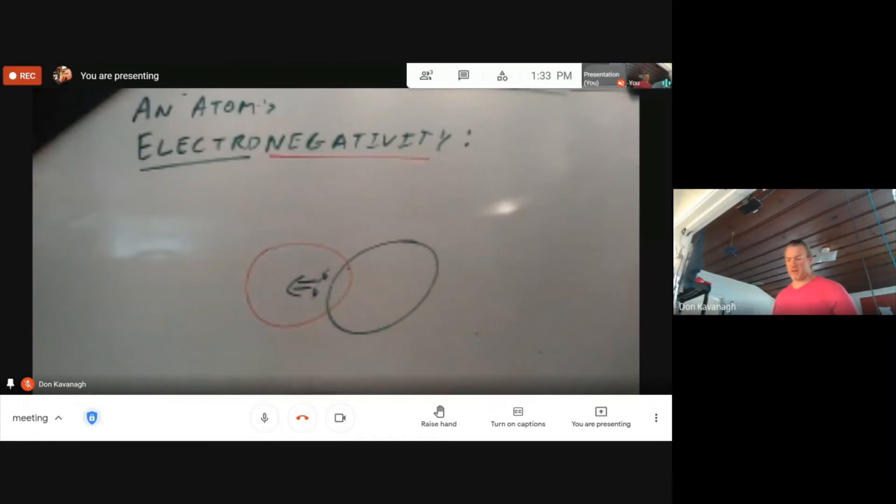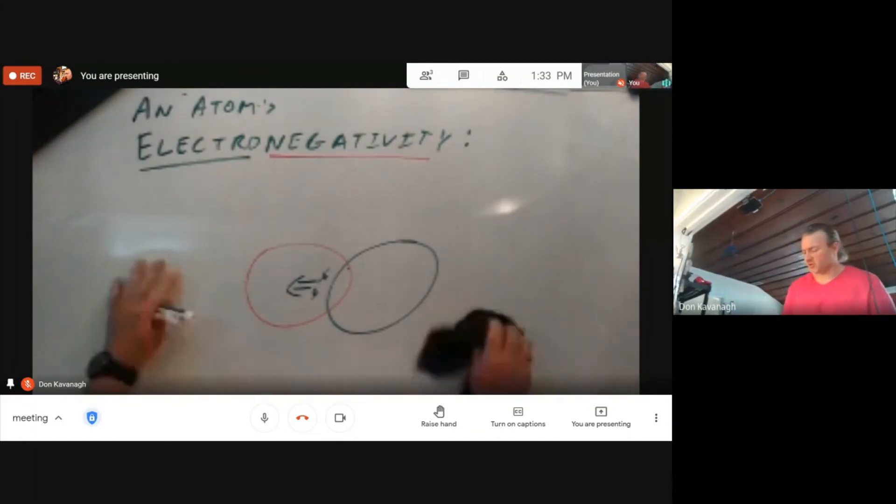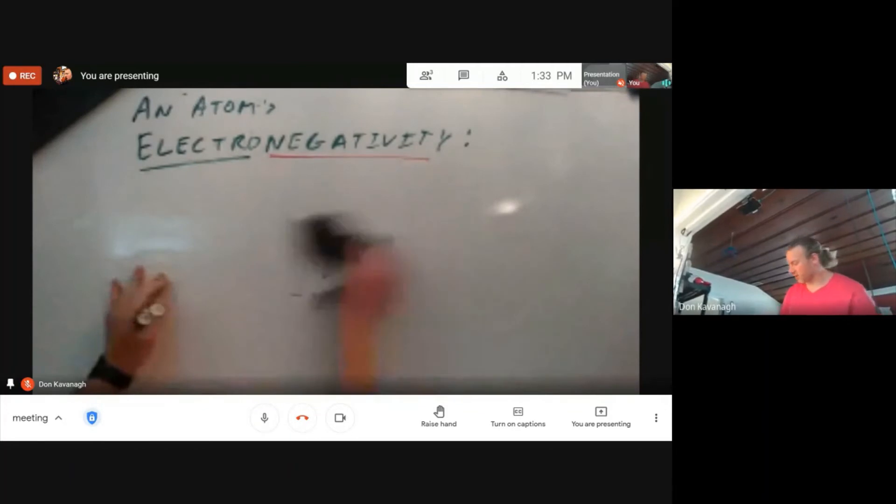To predict which atom has the higher electronegativity, look at a trend based on the periodic table. A hidden trend or secret trend of the periodic table, but let's crack that code.